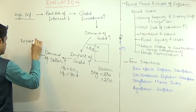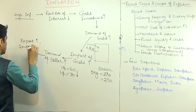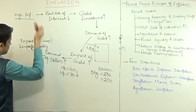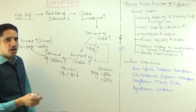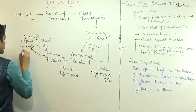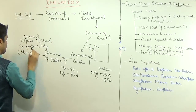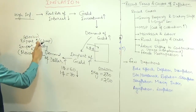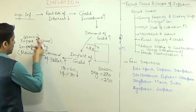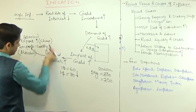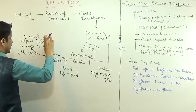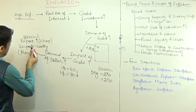When currency depreciates, exports should ideally increase because Indian goods become cheaper for foreigners. However, imports also become more costly. The problem is that our import basket is larger than our export basket — we export roughly 300 billion dollars but import roughly 450 billion dollars. So while we gain on exports, we lose more on imports, and the net effect is negative. High inflation offset the price advantage from depreciation by increasing the cost of production.